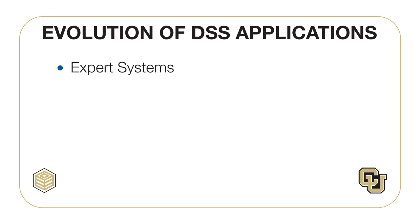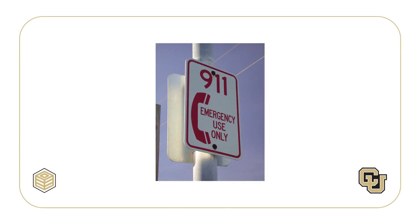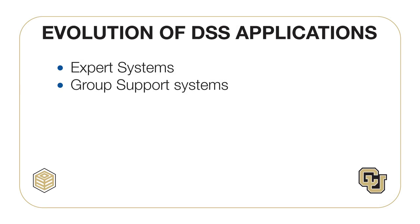A number of familiar applications have been born from DSS, which will give you a sense of the field's evolution. The term DSS encompasses them all, but they are each a distinct subgroup. Expert systems are computer programs that incorporate the knowledge of one or more human experts in a narrow problem domain and can solve problems that the experts ordinarily solve. The 911 system is a great example of an expert system — when you make a 911 call, the operator accesses an expert system to diagnose the problem and dispatch the police or paramedics.